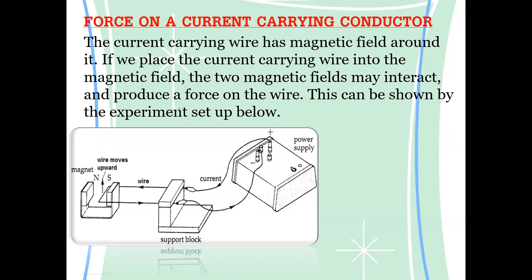Why does this wire experience a force? In this figure, we have a power supply passing a current through the wire. Due to the current, there is a magnetic field — the wire produces a magnetic field around it. There is also a second magnetic field: the magnetic field of the permanent magnet, from north to south. So two magnetic fields are present, and whenever there are two magnetic fields, there is always a force between them.